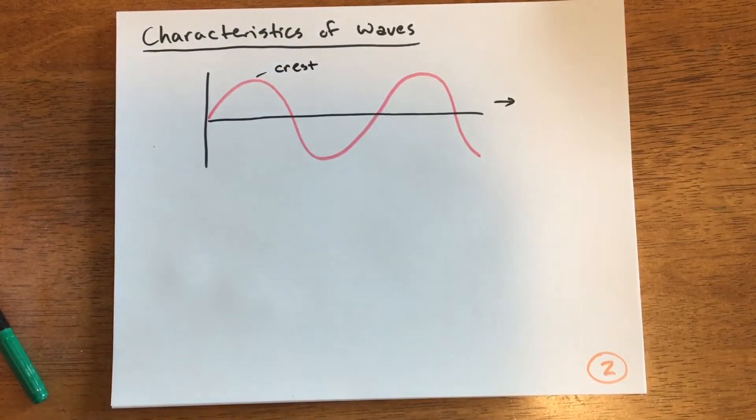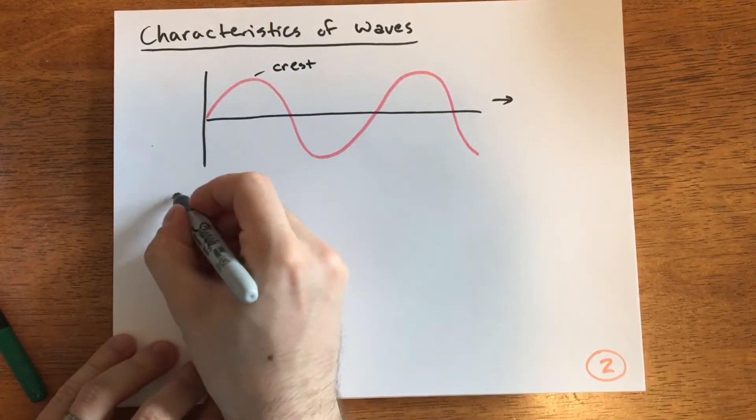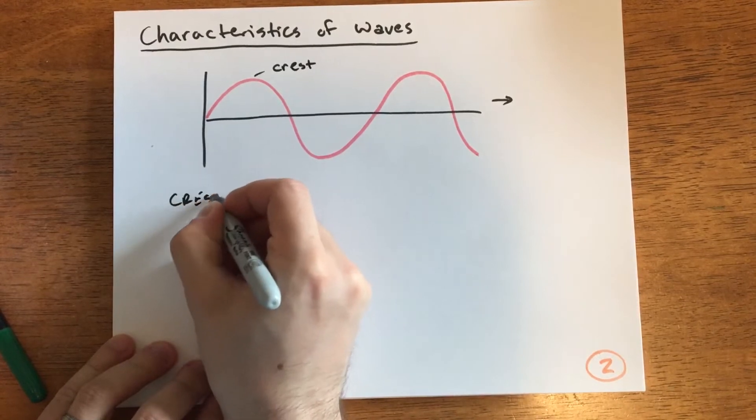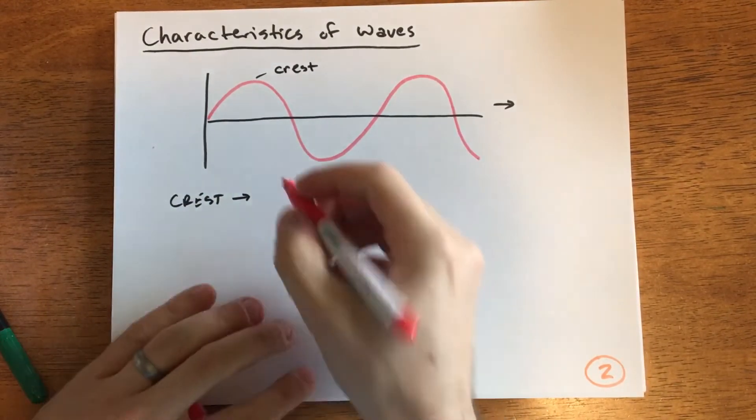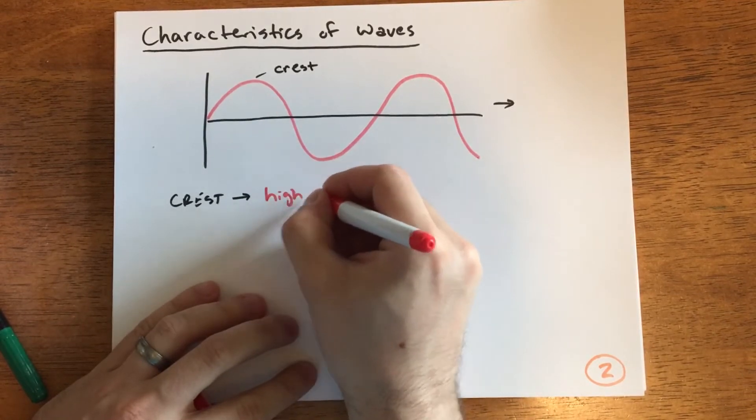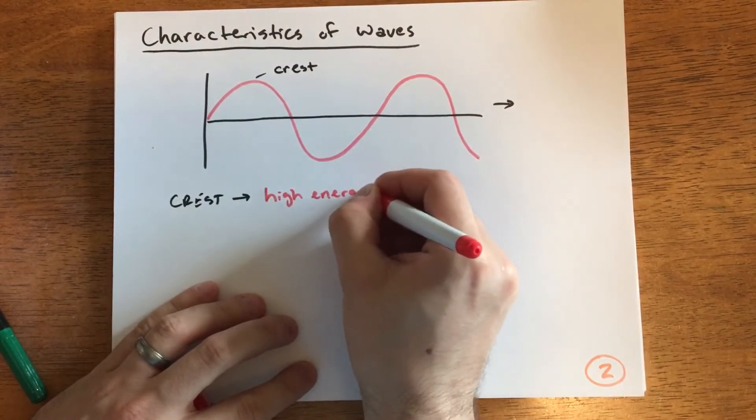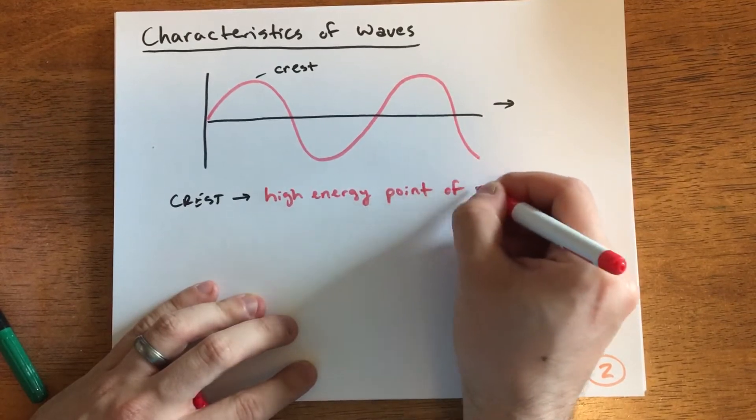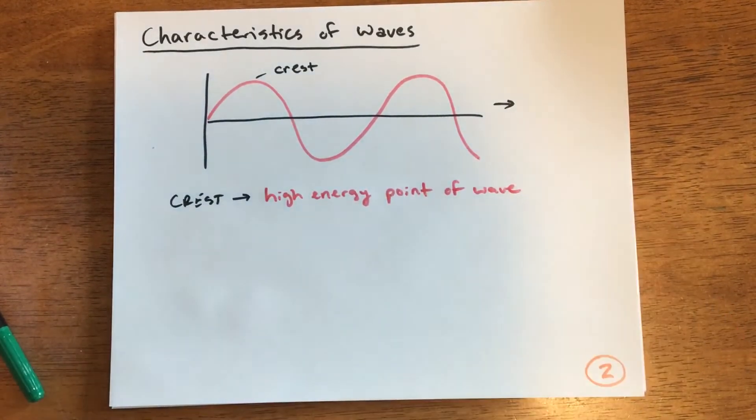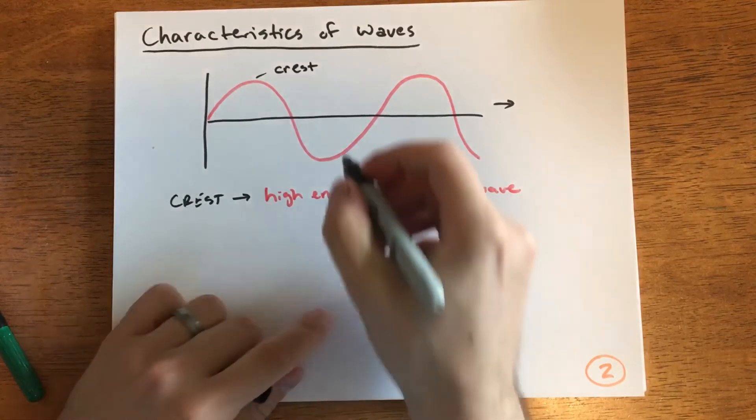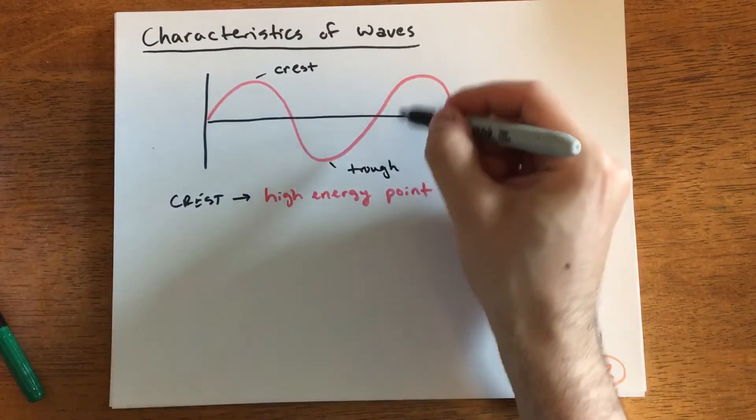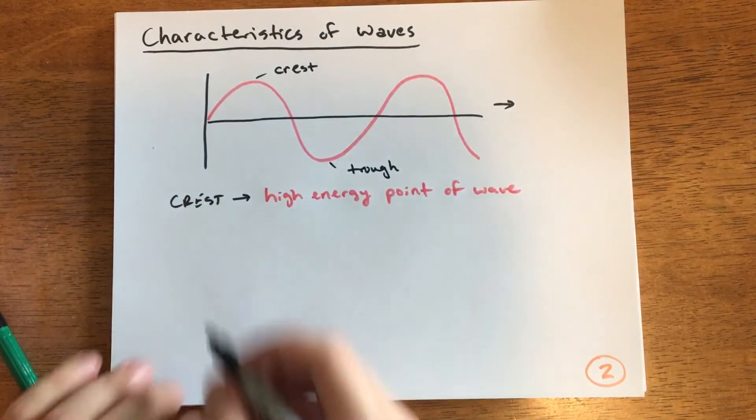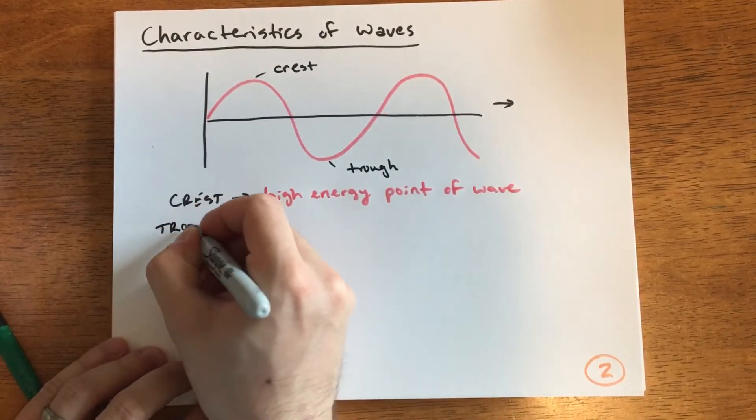The crest is the high energy point of the wave. That means we also have the bottom part, called the trough. Because it's shaped like a trough, it's the low energy point of the wave. Sometimes these are separated by a large amount, sometimes not so much.